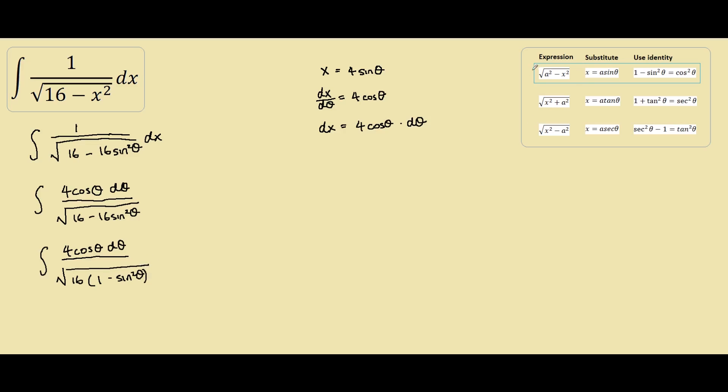Remember, looking at this reference row, if you are using the substitution x equals a sin theta, you expect to use the identity 1 minus sin squared equals cos squared theta. So we have 1 minus sin squared theta here, we can replace it with cos squared theta.